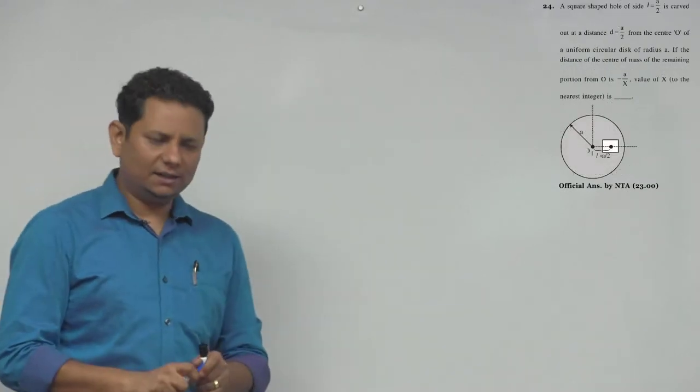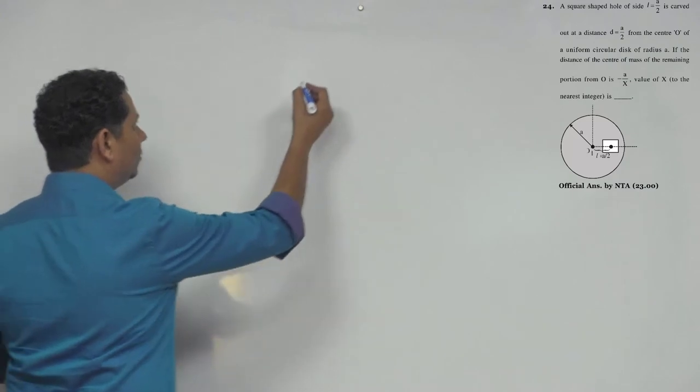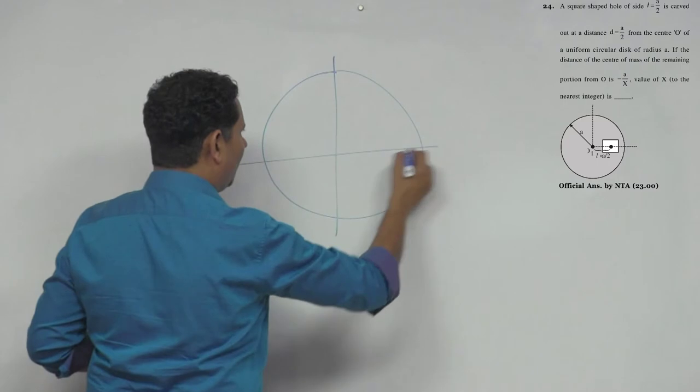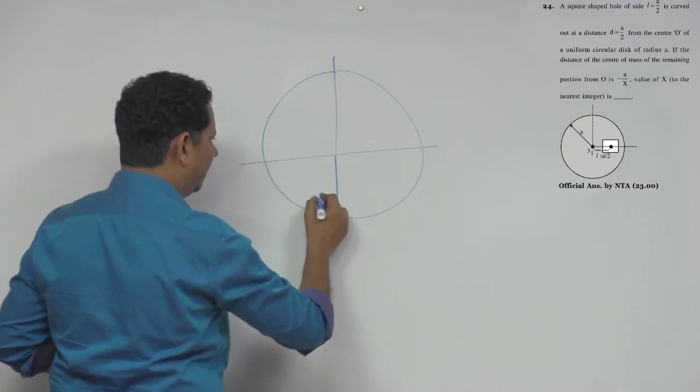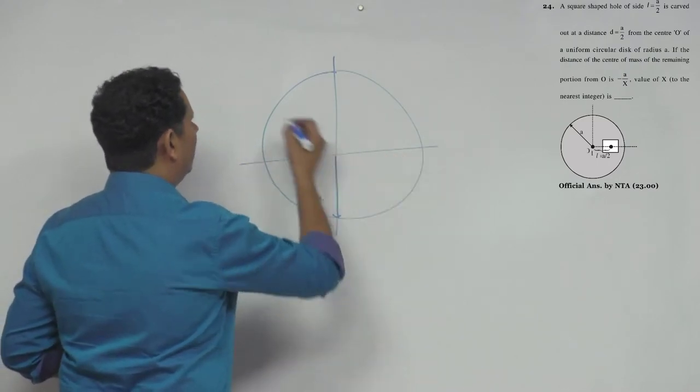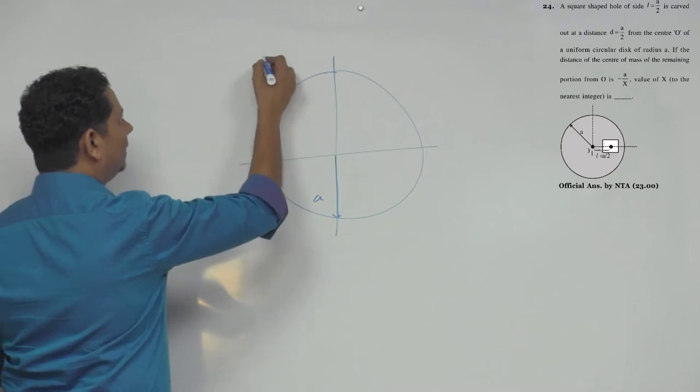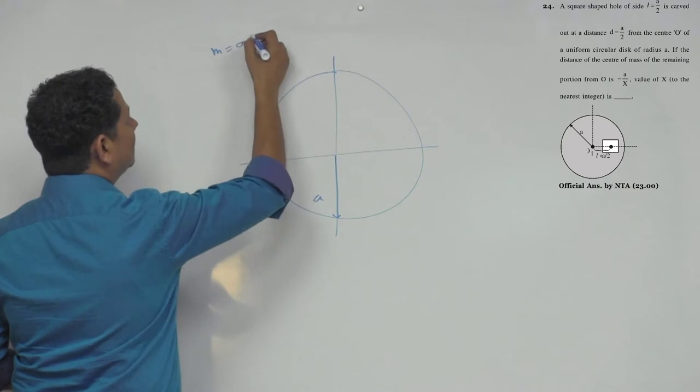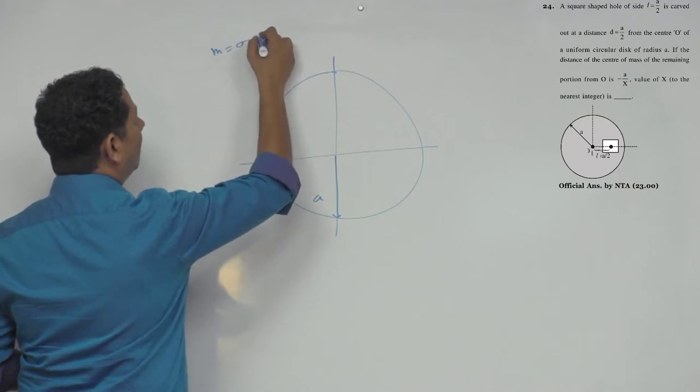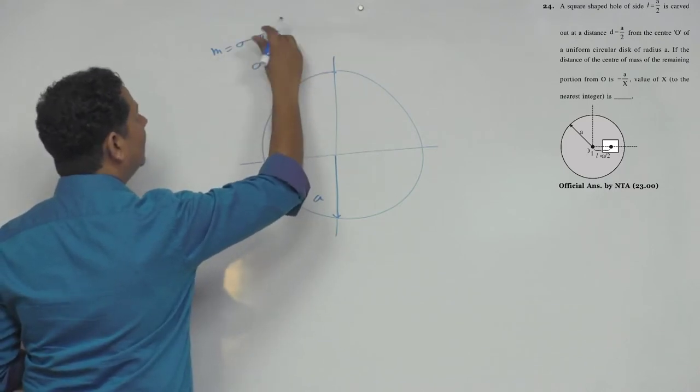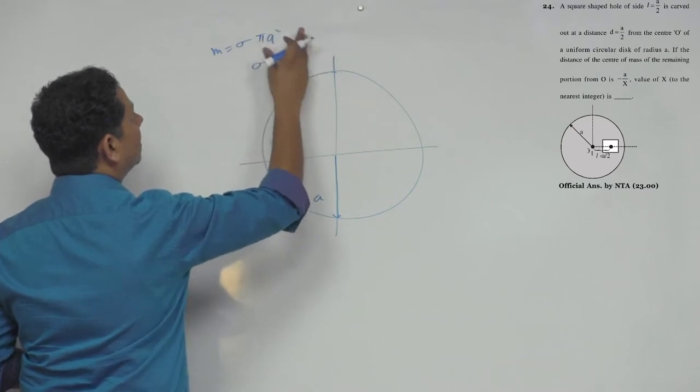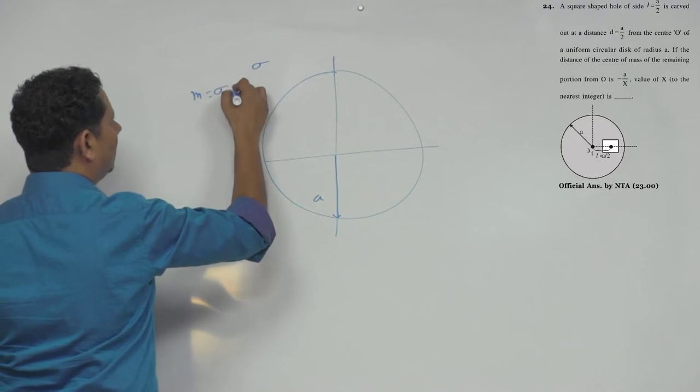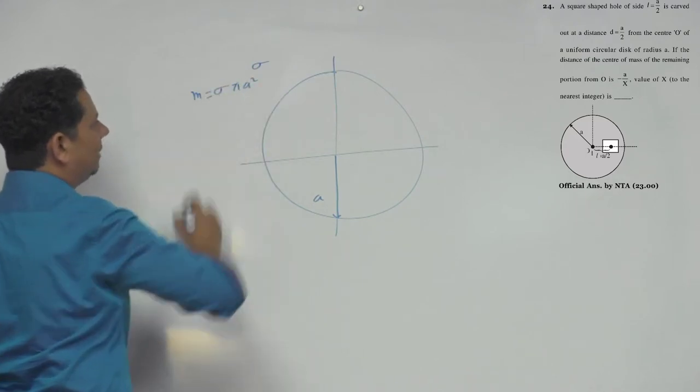Now, center of mass is a good question. The scenario is that a circular disk which has radius A, and let us say density is sigma and mass M. So we can write mass as sigma multiplied by pi A square. So this mass of the disk is sigma multiplied by pi A square.